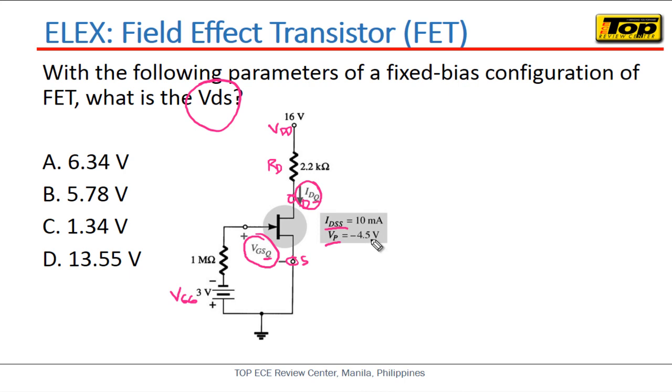So pinapahanap sa atin yung voltage across the DS. Ngayon paano ba hahanapin yung VDS? Kailangan natin kunin yung equation on the side of the circuit using the KVL. At KVL alam naman natin yan - gagawa tayo ng loop to get the voltage drops across the resistor and across the DS and of course yung voltage source natin, 16 volts. Now as the loop passes through the source, 16 volts - this is our VDD.